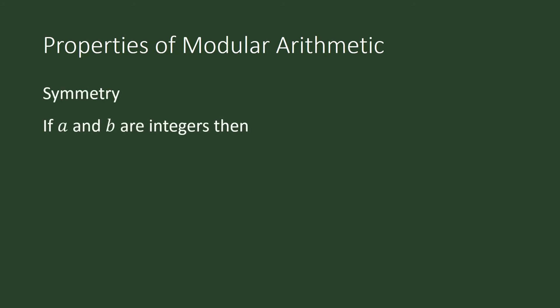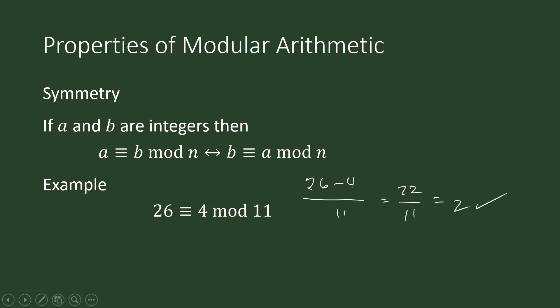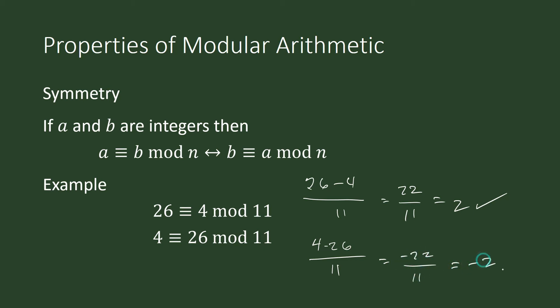Symmetry: if a and b are integers, then a is congruent to b mod n if and only if b is congruent to a mod n. For example, 26 is congruent to 4 mod 11. We verify: 26 minus 4 divided by 11 equals 2, confirming the congruence. Now, is 4 congruent to 26 mod 11? Using our definition: 4 minus 26 divided by 11 equals negative 2, and negative 2 is also an integer, so yes, this is true.